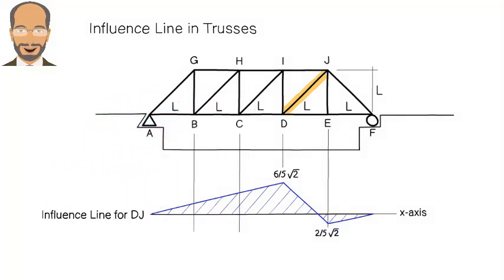What does this influence line tell us? It tells us that axial force in DJ is zero when the unit load is at A. Then the force gradually increases as the unit load moves to the right, until it reaches point D. At that time, the member would be in tension, carrying a force of 6 over 5 square root of 2.